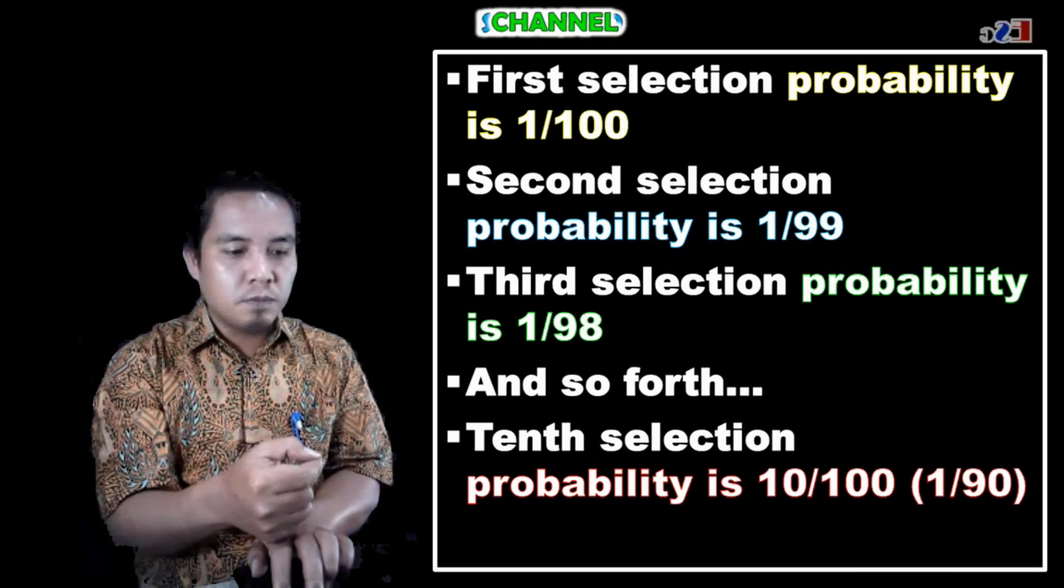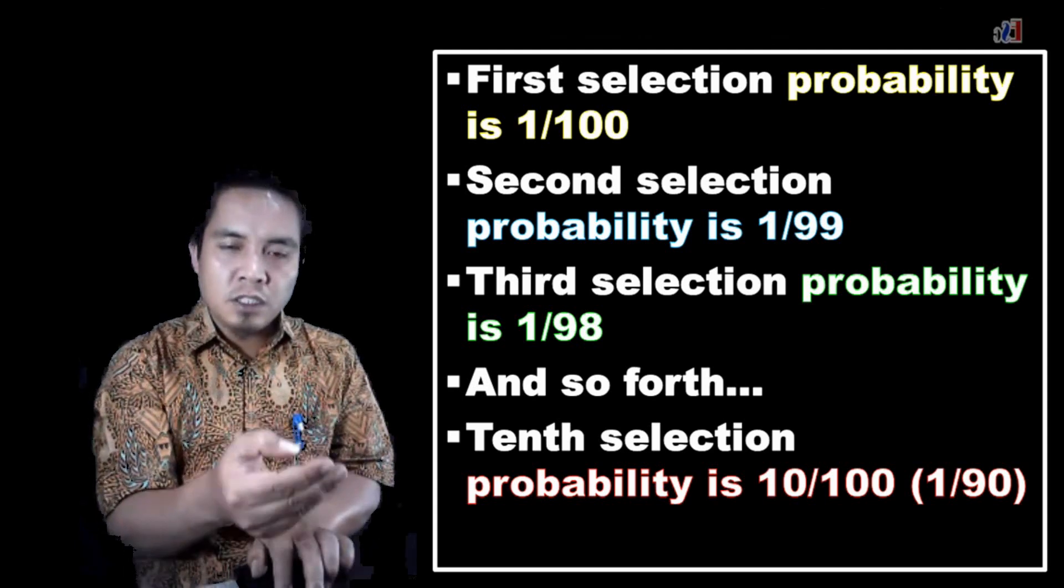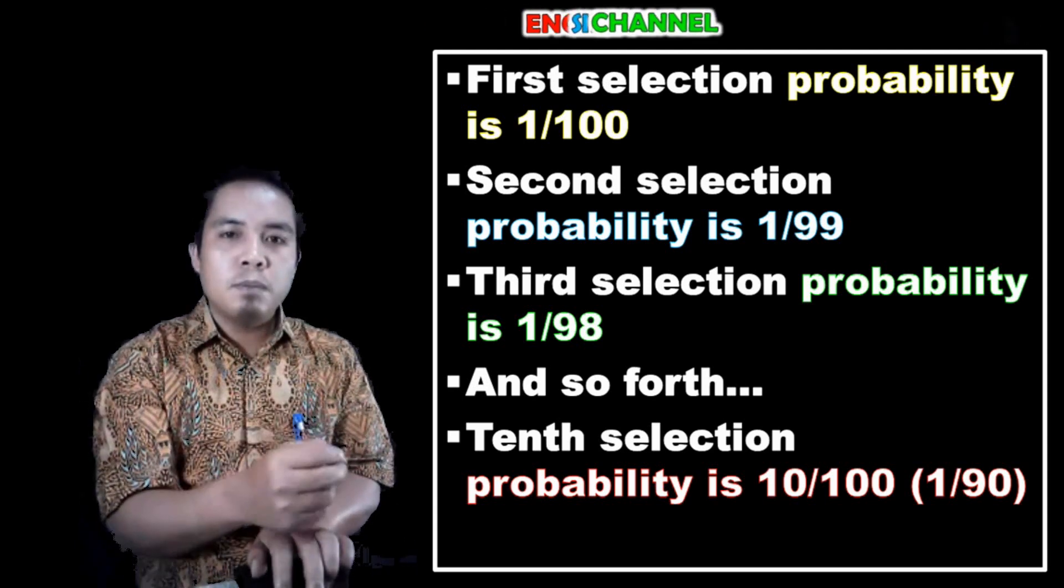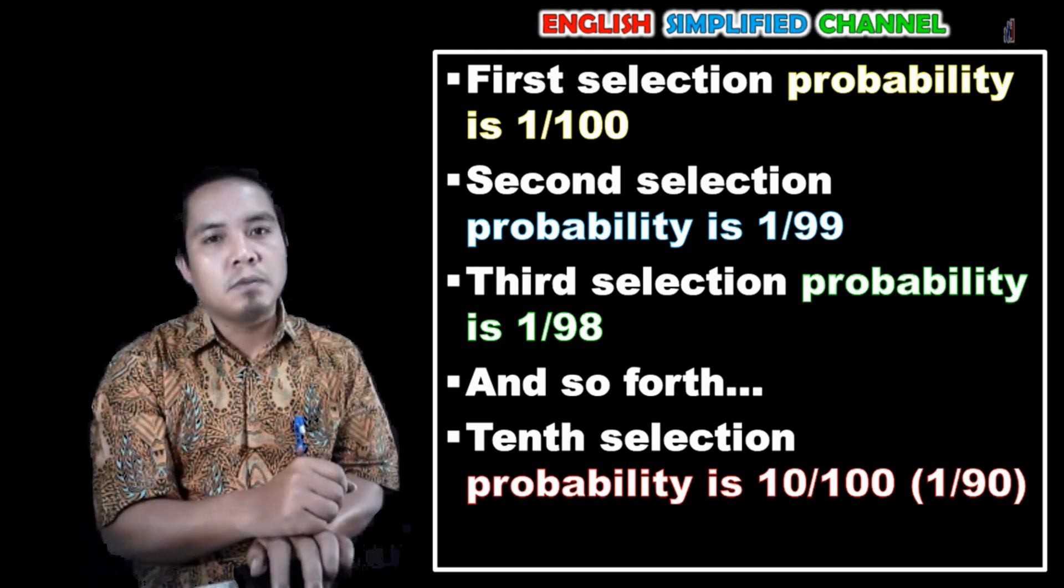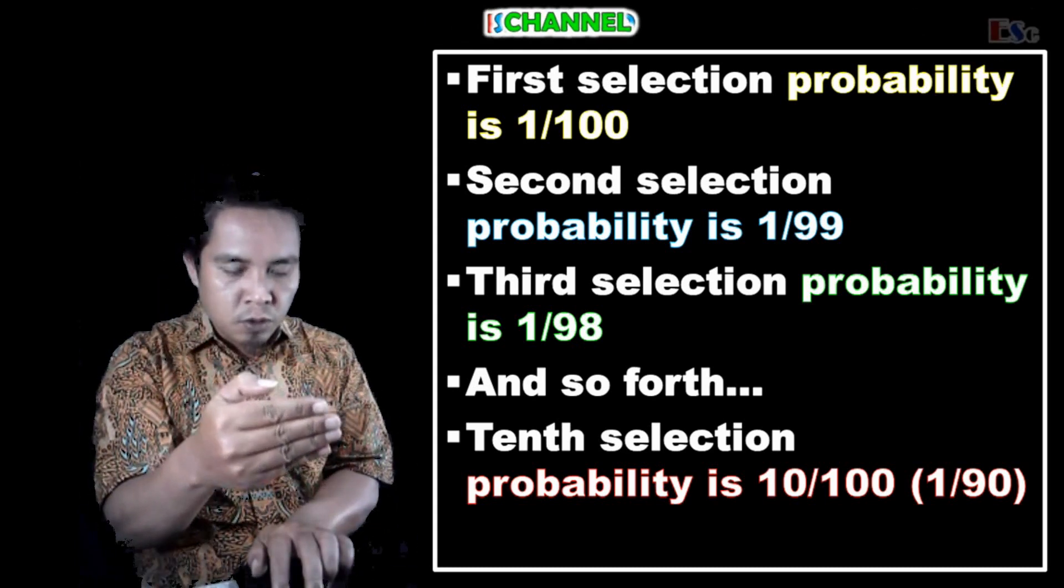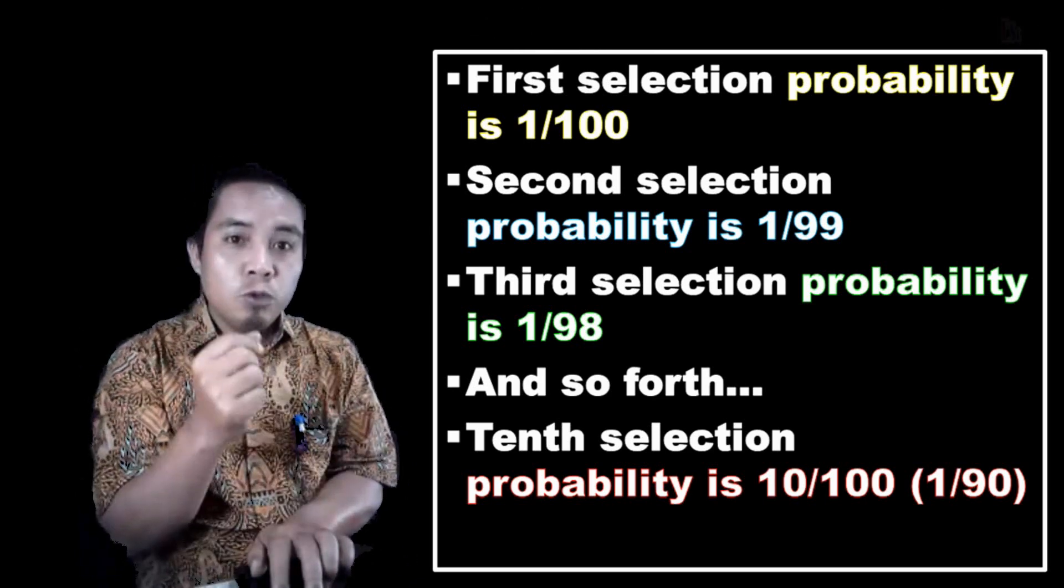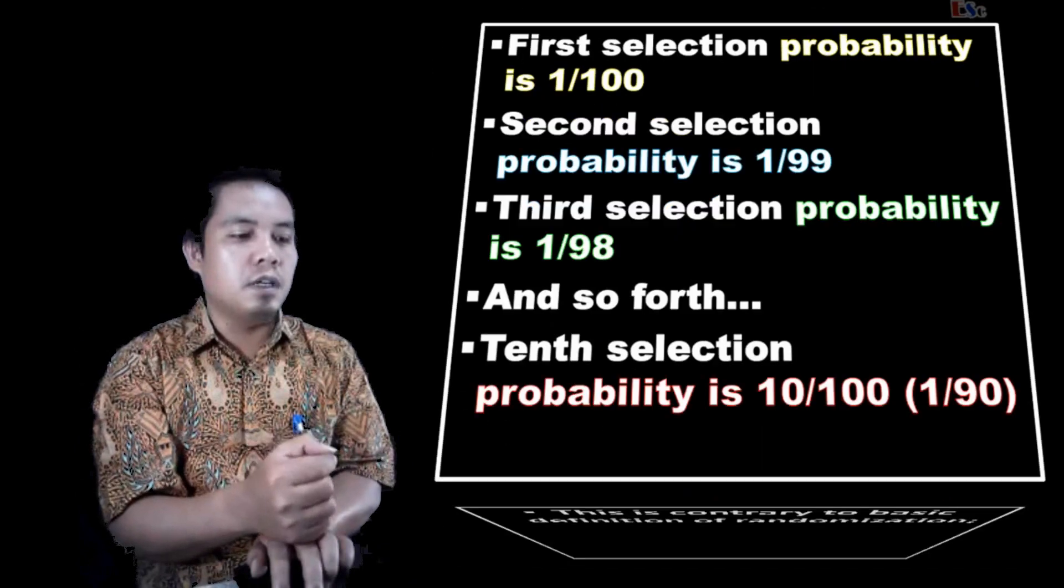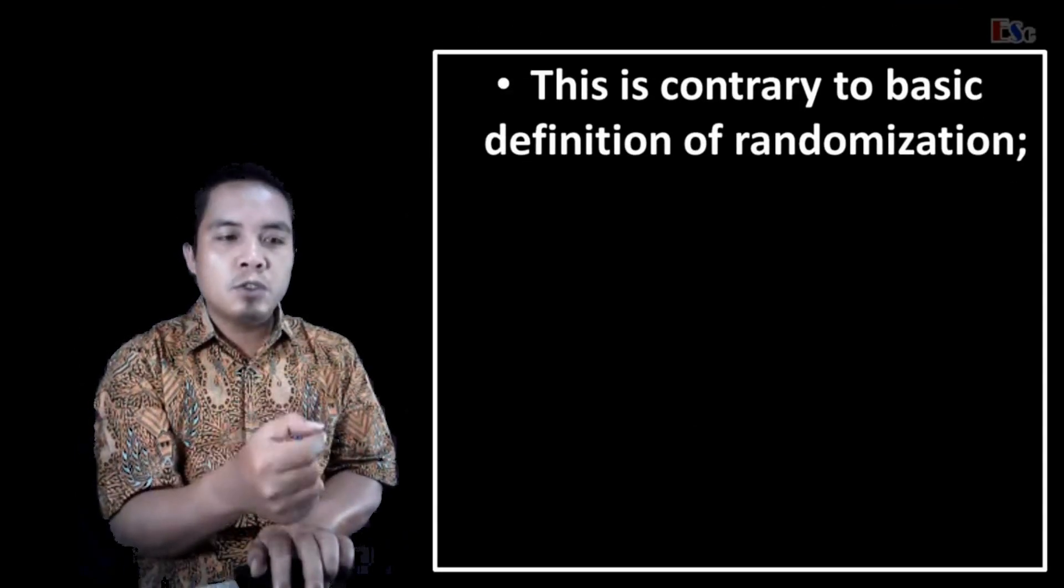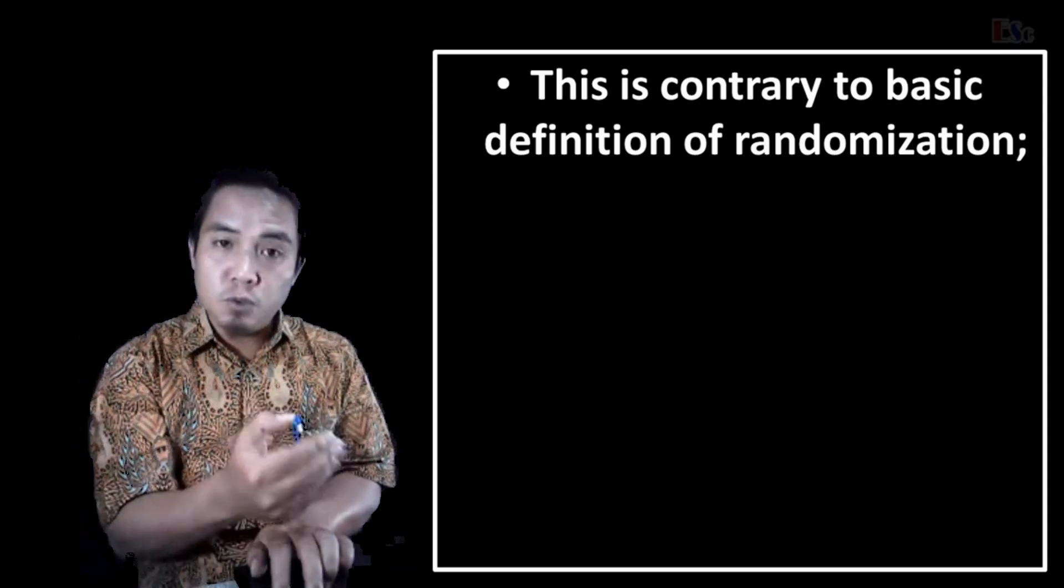And if we do this, then this is contrary to basic definition of randomization, in which each element has an equal and independent chance of selection. But by following this, that is contrary to this rule.